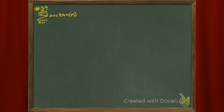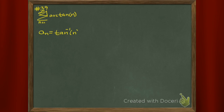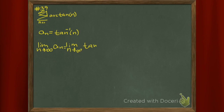They want to know whether or not this series converges or diverges. Looking at this series — the sum from n equals 1 to infinity of the arctangent of n, which is the inverse tangent — if I look at its underlying sequence, then I try to see if that sequence converges. I do that by taking the limit as n goes to infinity of the inverse tangent of n, so we're trying to find out what that limit is going to be.